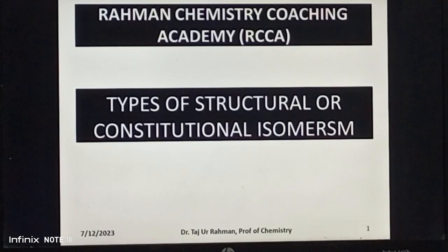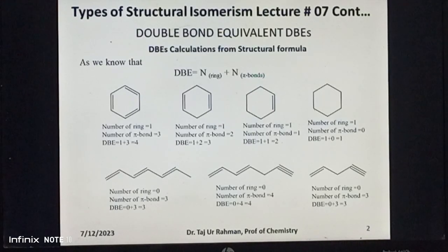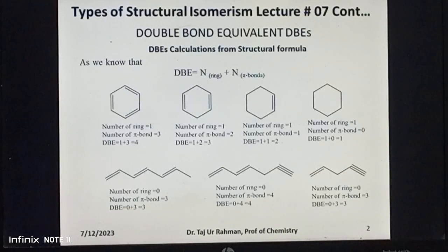In today's lecture we will discuss and explain how double bond equivalent (DBE) can be calculated from any given structural formula of an organic compound. As discussed in lecture number six, DBE is equal to the number of rings plus the number of pi bonds in a compound. This means one can easily calculate double bond equivalence values by simply counting and adding up the total numbers of rings and pi bonds. It may be noted that a triple bond contains two pi bonds, so whenever there is a triple bond in a compound its DBE value must be counted as two.